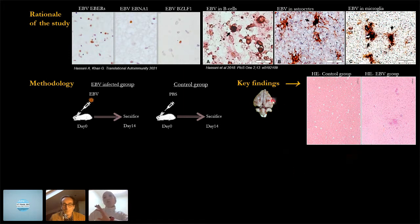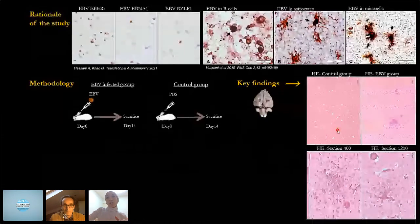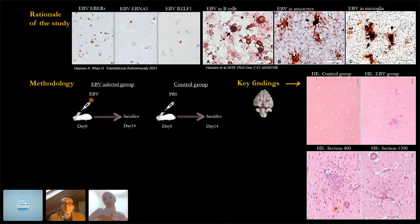We took one brain hemisphere that had these aggregates and sectioned it entirely. It turned out that the aggregates were scattered throughout the regions of the brain and they formed bilaterally as well.